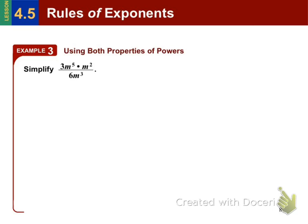So using both properties of powers. In a problem like this, you want to simplify your numerator first, then combine it with the denominator. So we'll go ahead and simplify by first using the product of powers property in the numerator, which means 3 times m to the 5th times m squared. Since the two bases of m have exponents, we can add the 5 and the 2 together. We will get, by simplifying that, 3m to the 7th power divided by 6m to the 3rd power.